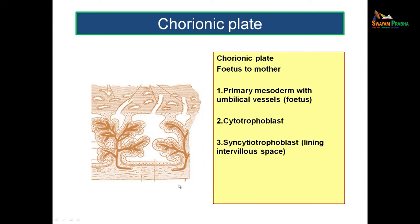This is a cut section of the placenta showing the chorionic plate on the fetal side and the basal plate on the maternal side. From fetus to mother: first is the primary mesoderm with umbilical blood vessels, then a single layer of cytotrophoblast cells, then outer to it the syncytiotrophoblast, which lines the intervillus space. This is one villus; this is another villus; the space between them is the intervillus space, lined by syncytiotrophoblast.